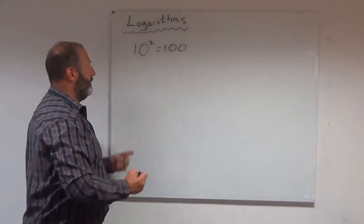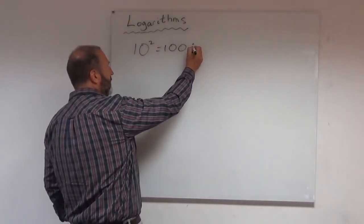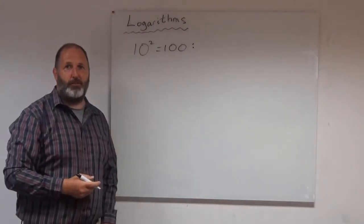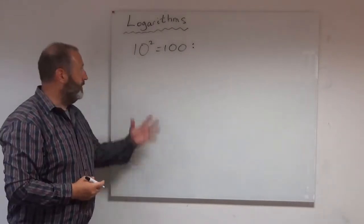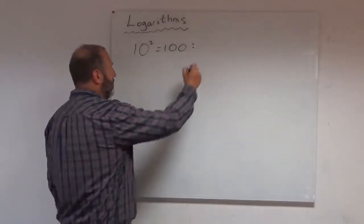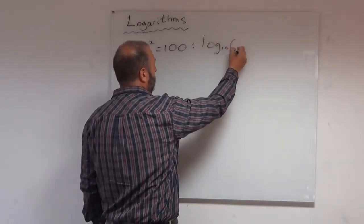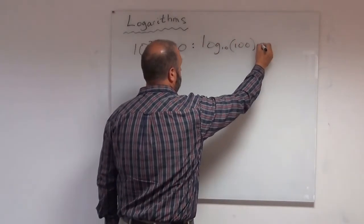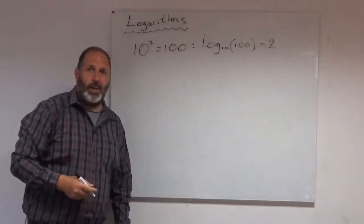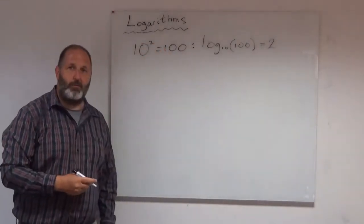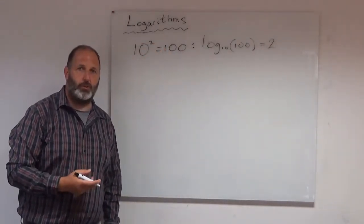I could, however, have the same information but use a different shorthand notation. So I'm going to write the same information using logarithms. I could have this: log to the base 10 of 100 equals 2.